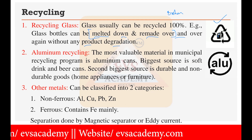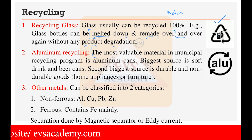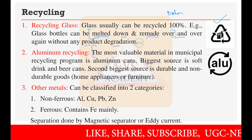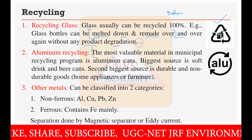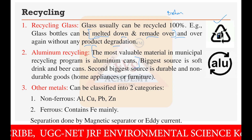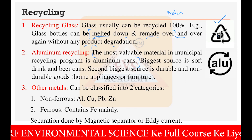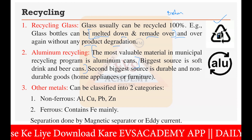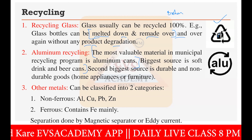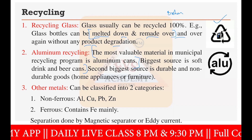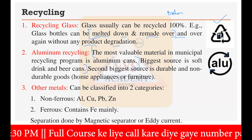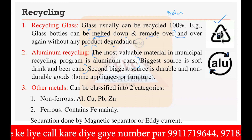Then we have aluminum recycling. Aluminum cans are the most valuable material in the municipal solid waste recycling program. The biggest source is soft drink and beer cans, and the second biggest source is durable and non-durable goods such as home appliances and furniture. These cans can be easily recycled by melting and remaking, indicated by the aluminum recycling Mobius loop symbol.